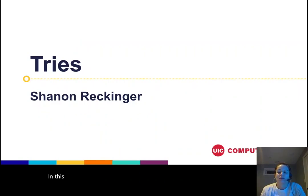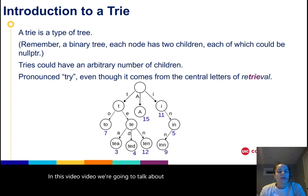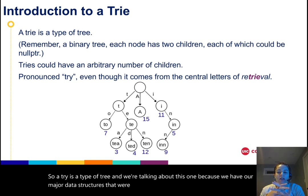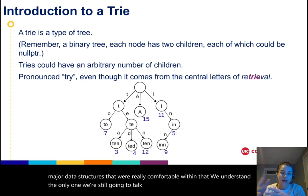In this video, we're going to talk about tries. A trie is a type of tree. We're talking about this one because we have our major data structures that we're really comfortable with and understand. The only one we're still going to talk about that we haven't yet is graphs. But aside from those major data structures, there's all sorts of variations.